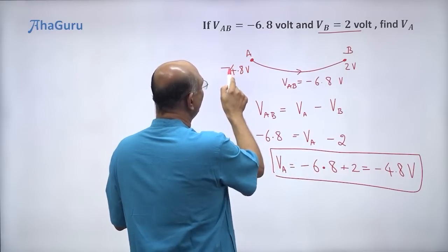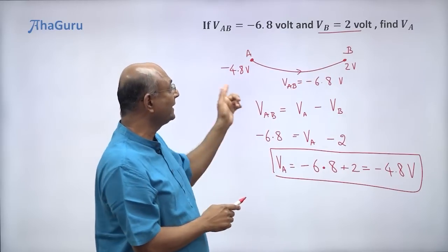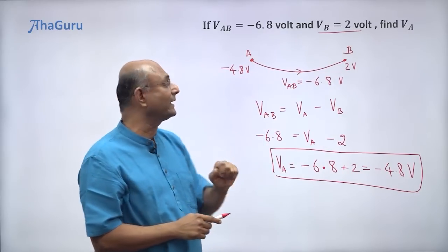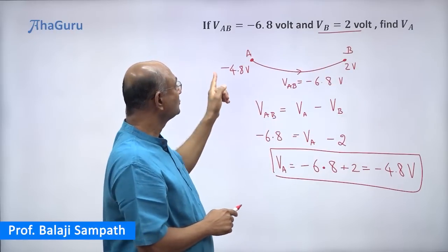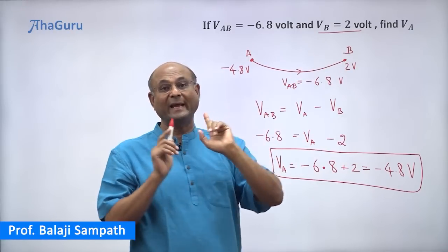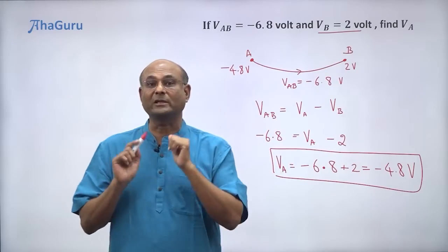So from minus 4.8, you have dropped by a negative number, which means you have risen by 6.8. So that number is going to be higher. So minus 4.8, that number is 2, higher. So potential drop is negative means the final potential is higher than the initial potential.